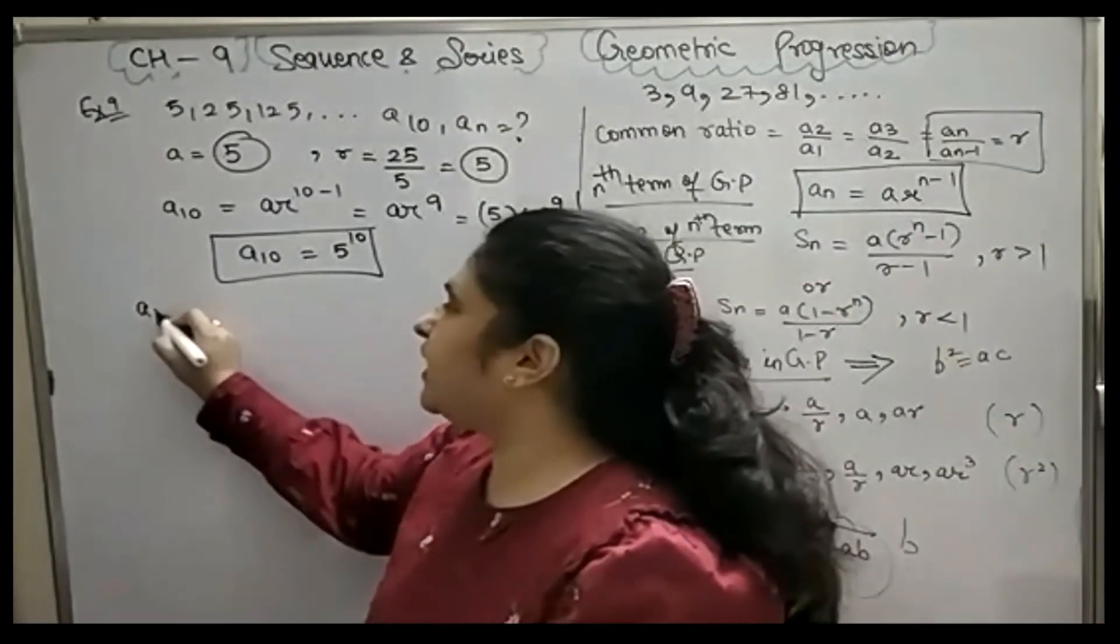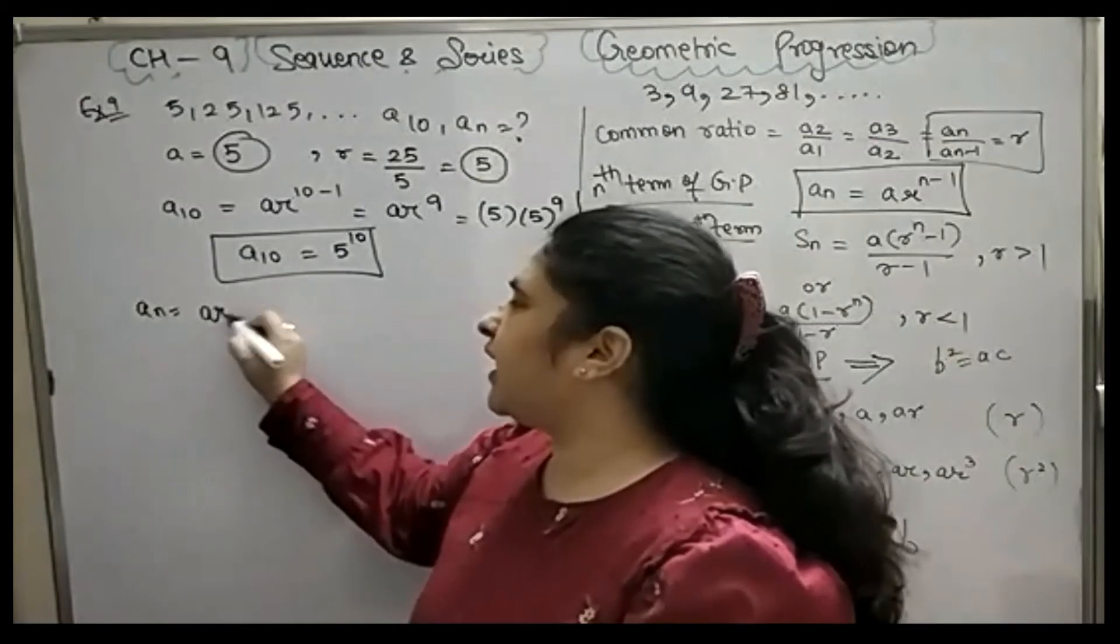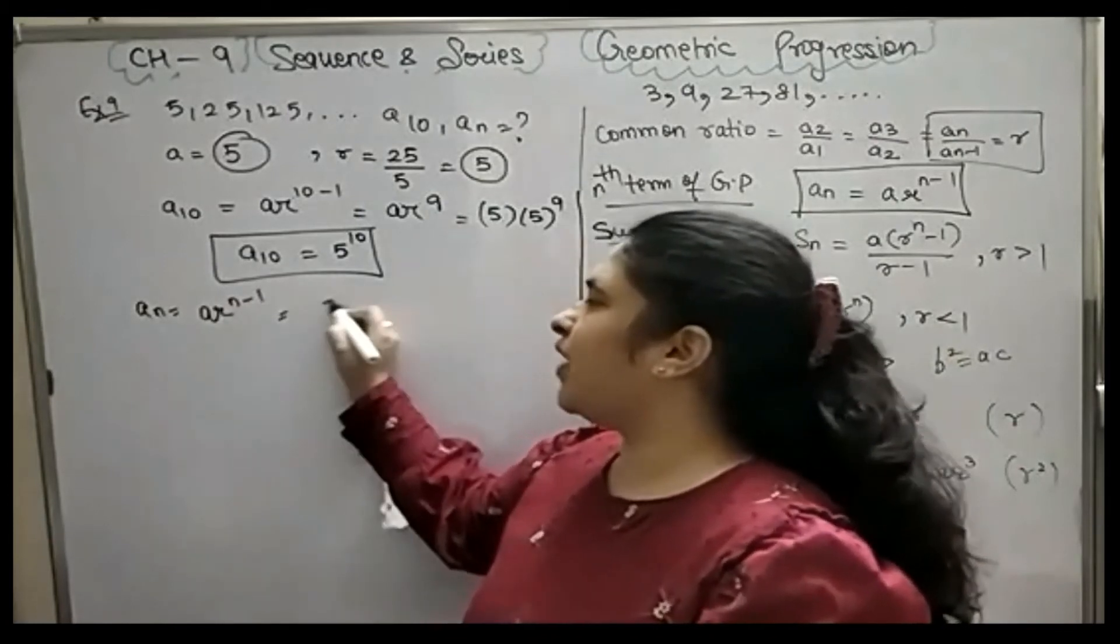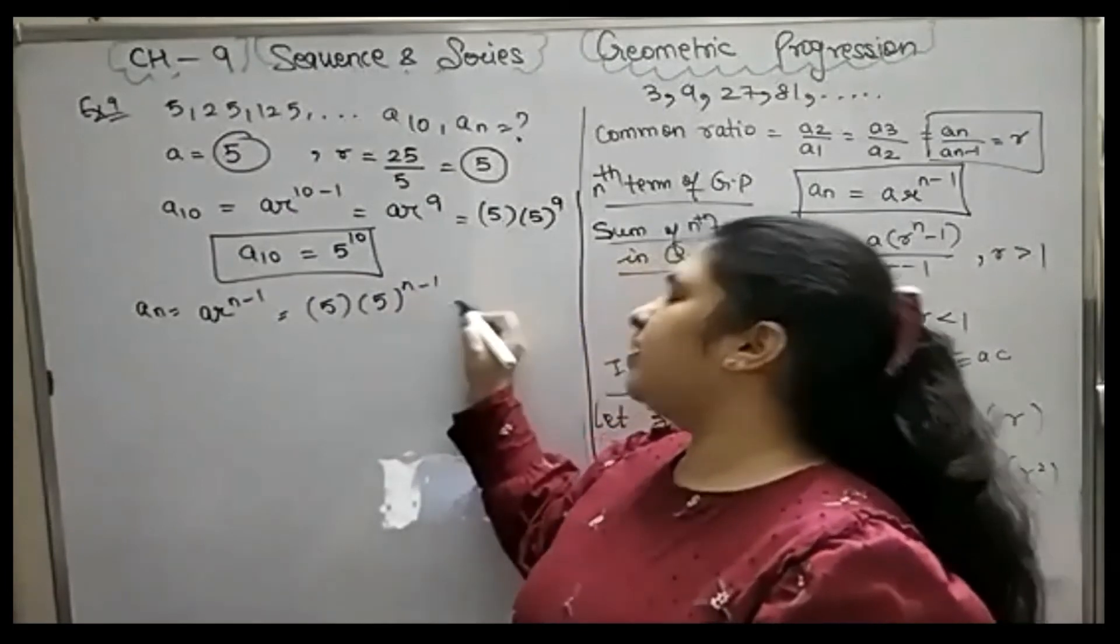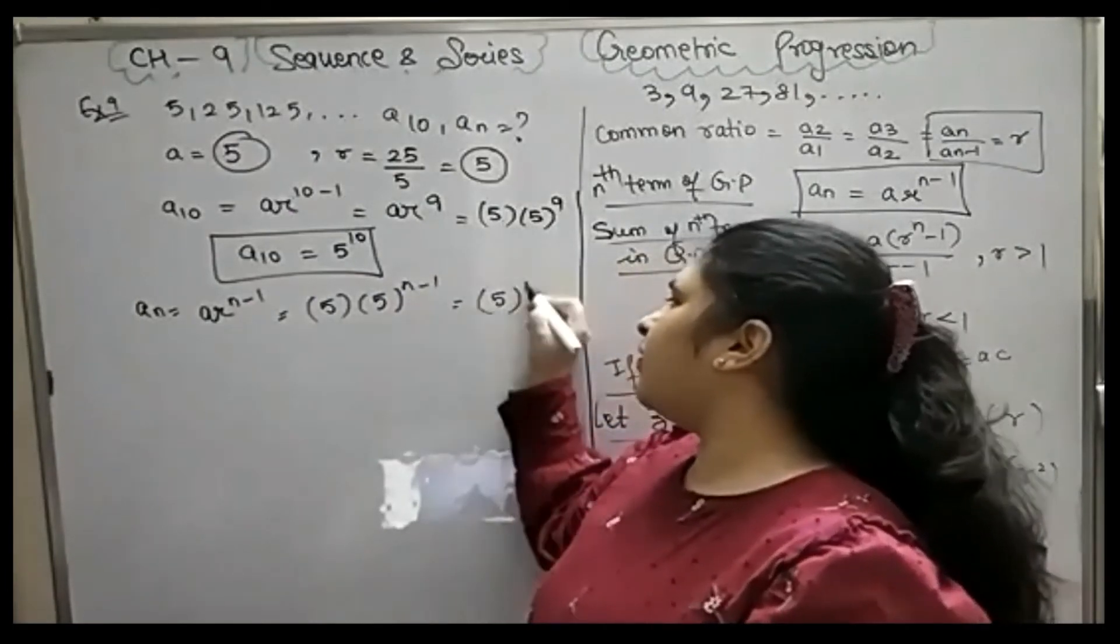Similarly, this GP's nth term is: An = A × R^(n-1). A is 5, R is 5. Similarly, when bases are equal, power must be added.